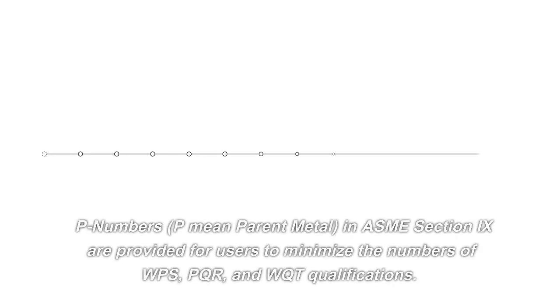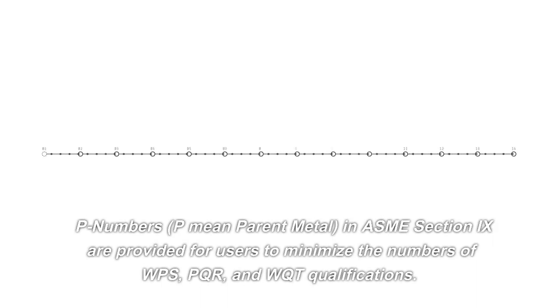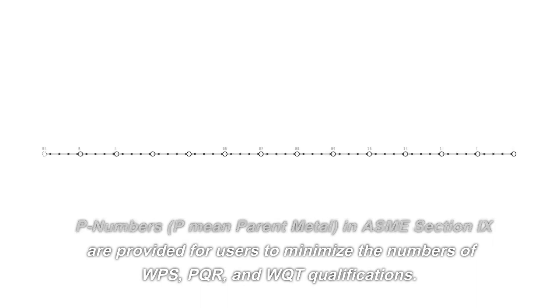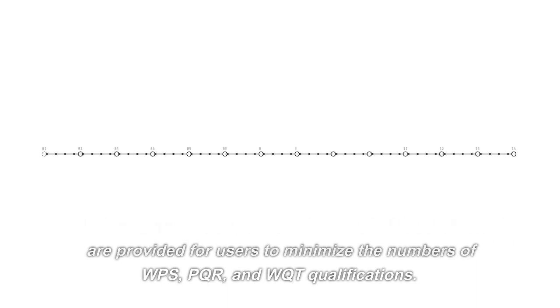What is a P number? P numbers, where P means parent metal, in ASME Section 9 are provided for users to minimize the number of WPS, PQR, and WQT qualifications.